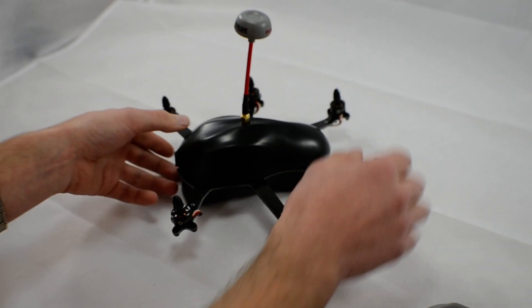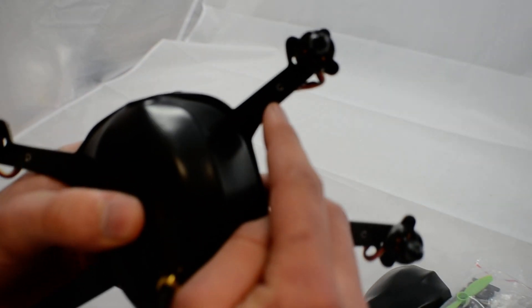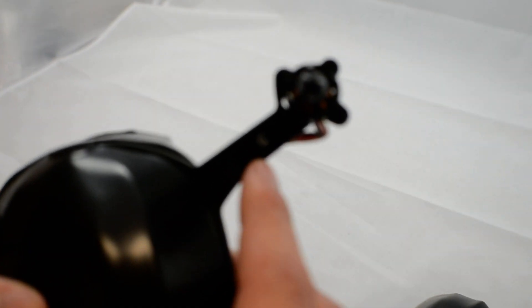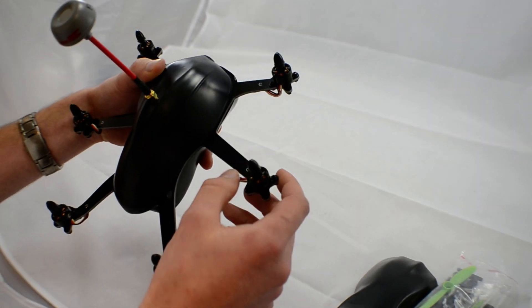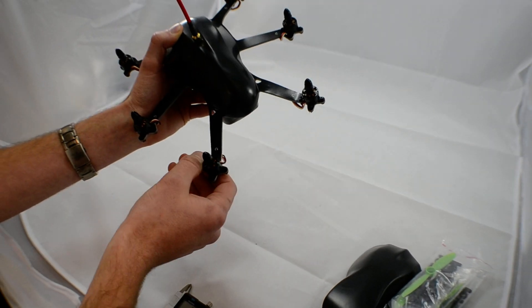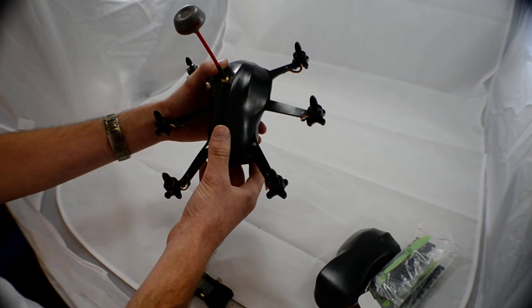Another quite nice feature as well is that the arms have the orientation of the motor on them, which means that you're not going to get confused when you're putting props on. So obviously you've got here anti-clockwise, clockwise, anti-clockwise, clockwise, anti-clockwise, and then clockwise again on the sixth motor.